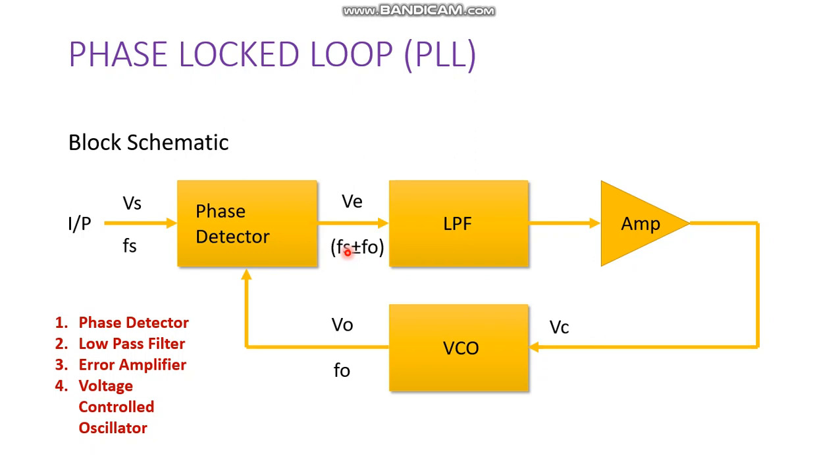So now the next stage is a low pass filter. We know at the low pass filter the high frequency will be attenuated and the low frequency will be passed. So essentially the fs plus fo will be attenuated and only fs minus fo will be available at the output of low pass filter.